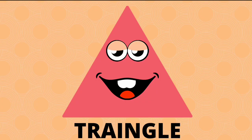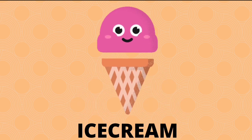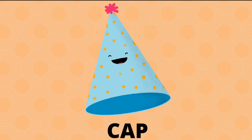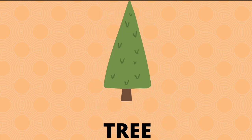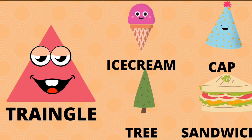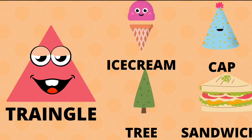Shape: triangle. Ice cream: triangle. Cap: triangle. Tree: triangle. Sandwich: triangle. Shape triangle — ice cream, cap, tree, sandwich: triangle.